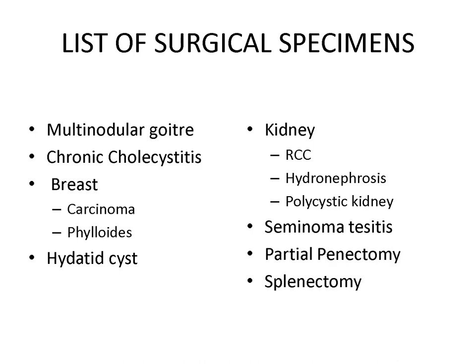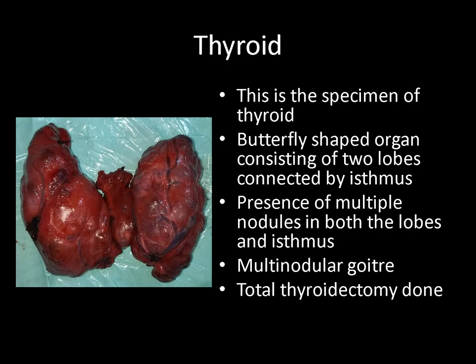Let us start discussing the first specimen. This is a specimen of thyroid, which is a butterfly-shaped organ consisting of two lobes connected by an isthmus. Very clearly you can see multiple nodules involving both the lobes and isthmus, and hence the pathology is multinodular goiter.